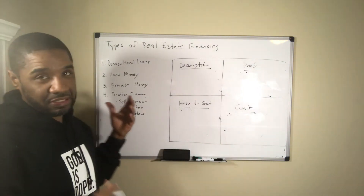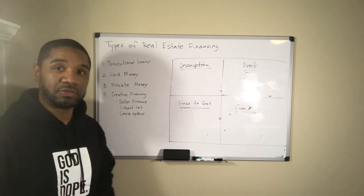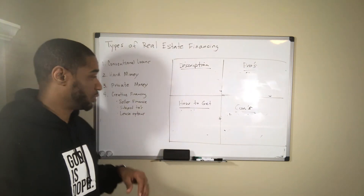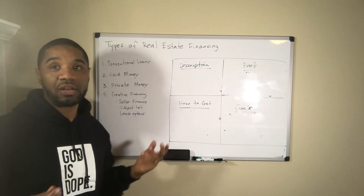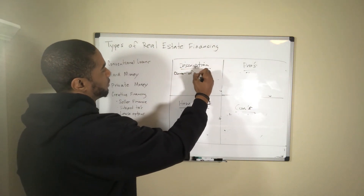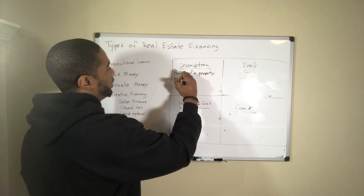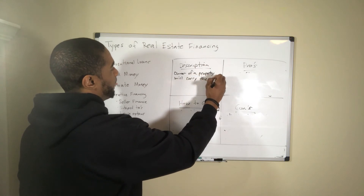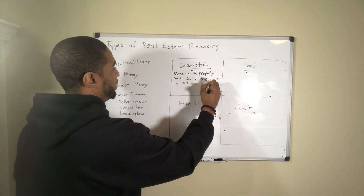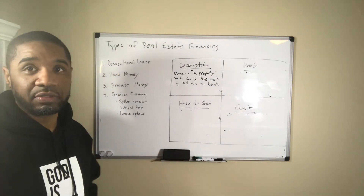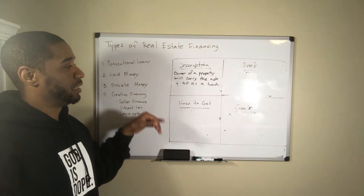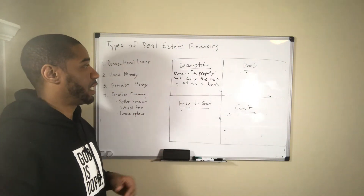Under creative financing there are tons of options: seller financing, subject-to financing, lease options, wraparound mortgages — so many different things you can do creatively to make deals work. I'm going to primarily talk about seller financing since that's what I know most about. In seller financing, essentially the owner of a property will carry the note and act as a bank. You set up a promissory note that specifies the terms, the length of the agreement, and so on.